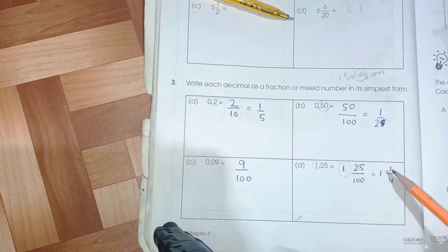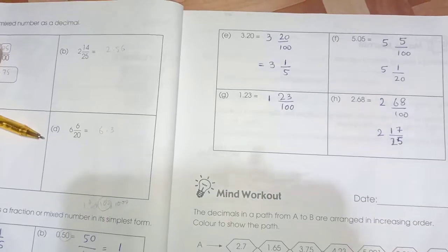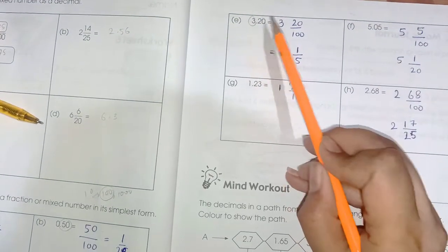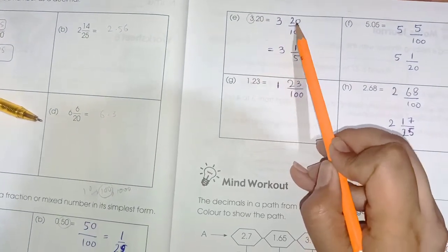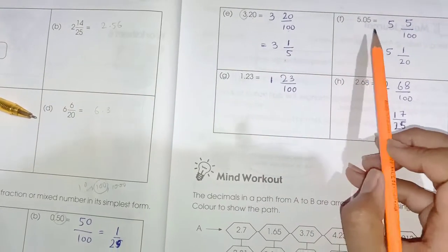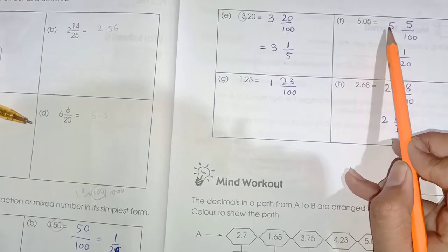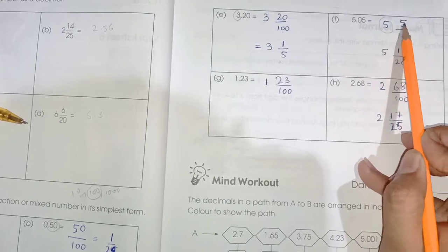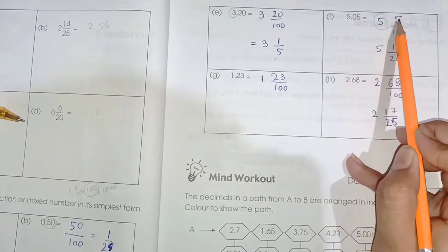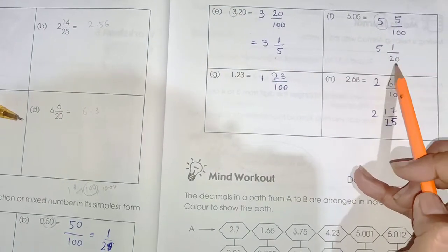Page number 27. Number E: 3.20. 3 is the whole number, 20/100. 5.05: 5 is the whole number and 5/100 because we have three digits.